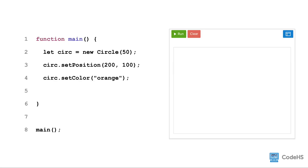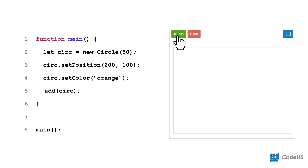Lastly, we add the shape to the canvas. If you try to run the code with what we have written so far, it still will not show up on the canvas. To add the shape to the canvas, we first must call the add function. Between the parentheses of the add function, we pass the variable name that is storing the shape. When we rerun the code this time, we see that the circle was added to the canvas.